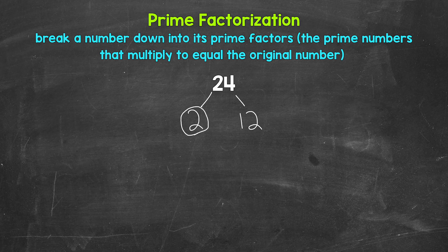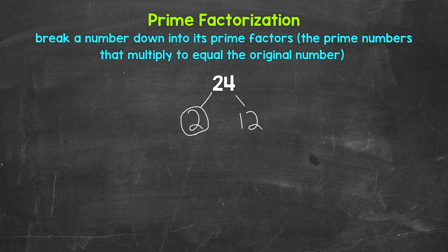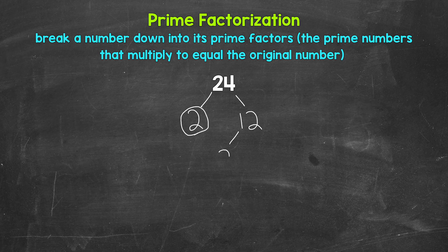Let's think of two factors for 12. Two and six are factors of 12. Two times six equals 12. So two and six.